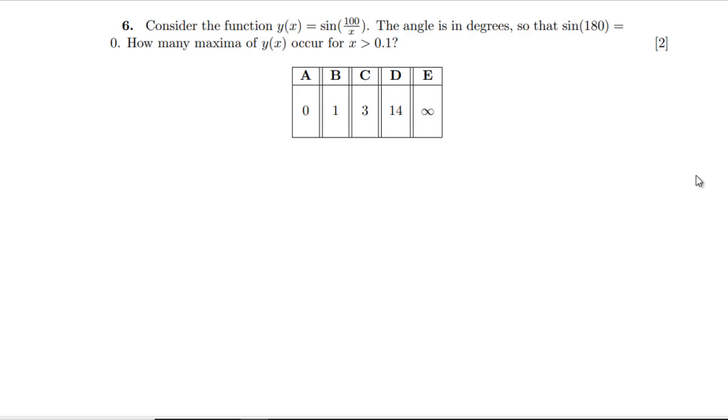Question six: oh, this looks more fun. Consider the function y equals sine of 100 over x. The angle is in degrees, so sine 180 is zero. Well, it would be if it's in degrees. How many maxima occur for x is greater than 0.1? Let's interrogate x a little bit. So when x is 0.1, we're going to have y is the sine of 1000. And as x increases, we're going to go to sine of zero.